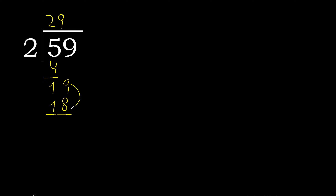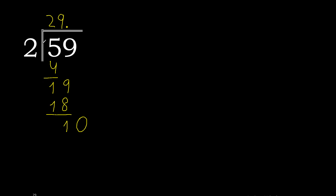Subtract 1. There is no number that goes down, therefore complete — always complete with 0. And here with the decimal point: 2 multiplied by 6 is 12.